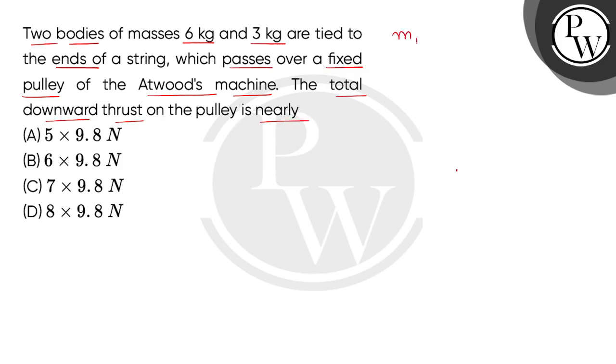Given here we have two bodies: first mass M1 is 6 kg, second mass M2 is 3 kg. We can observe that M1 is more than M2, which means that M1 body is heavy, so this will produce downward motion.